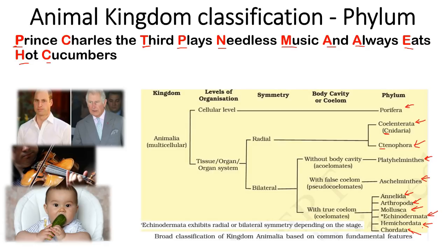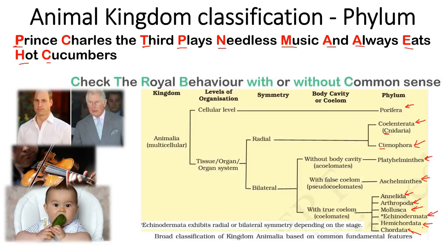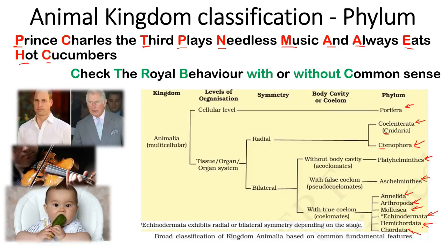Now the question is how to remember their properties, because some have a coelom, some have a pseudocoelom, some have radial symmetry, some have bilateral symmetry. That's where the second sentence helps: 'Check the royal behavior with or without common sense.' The highlighted letters in this sentence correspond to specific properties.